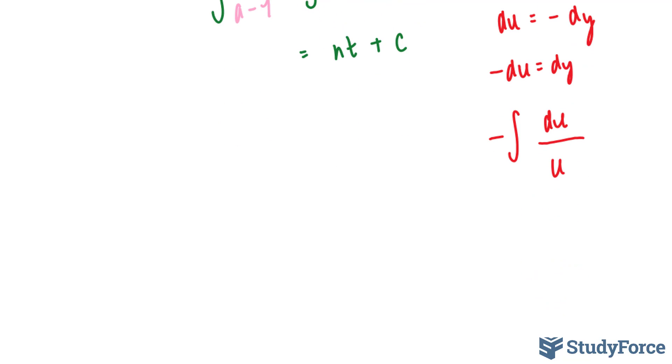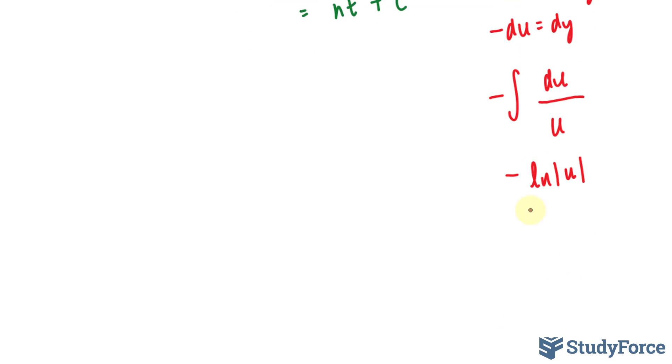Taking the integral of 1 over u is easy. It's actually ln absolute of u. And remember, u was set to a minus y. So we have negative ln a minus y, and I'll place that right here.